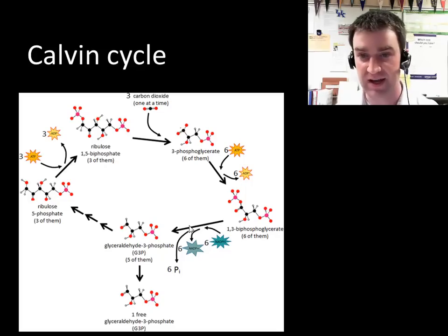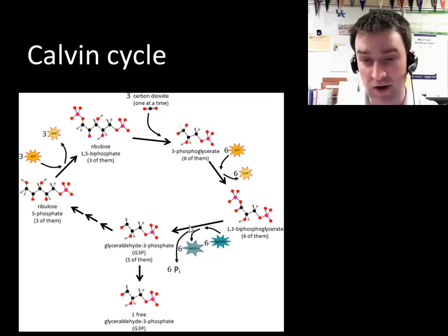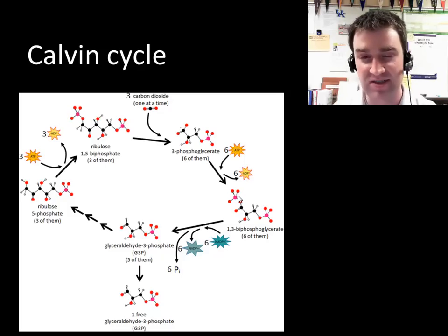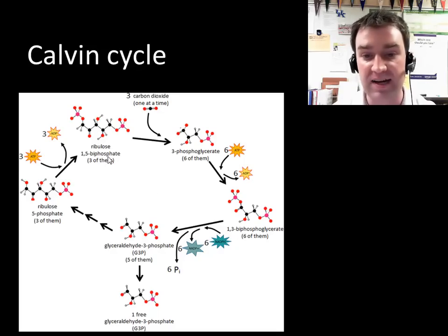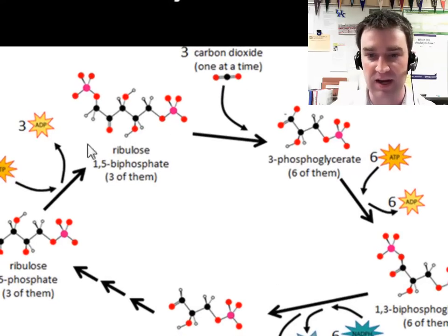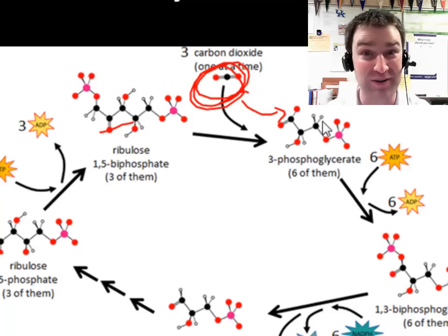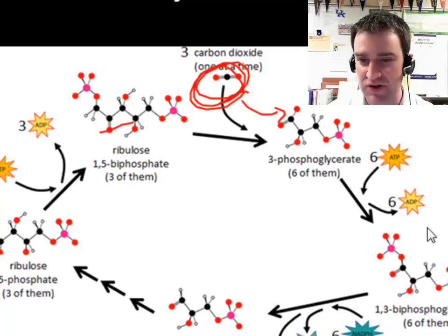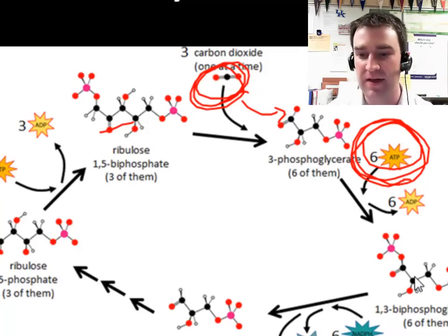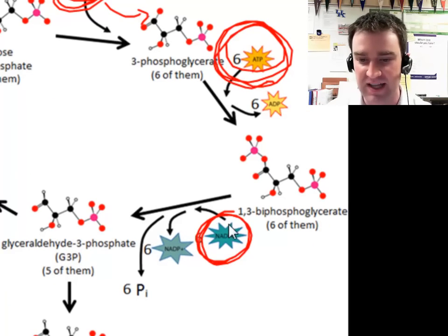Now we're ready for the Calvin cycle. The Calvin cycle takes ATP, NADPH, and carbon dioxide to build sugar. It takes place within the stroma of the chloroplast for eukaryotes, or in the cytoplasm for prokaryotes. If carbon dioxide is available, sugars already floating around can be combined with CO2 — a big sugar combines with more carbons to make an even bigger sugar, which is unstable and almost immediately splits into smaller sugars. Those small sugars are then phosphorylated with ATP energy and converted with high-energy electrons.